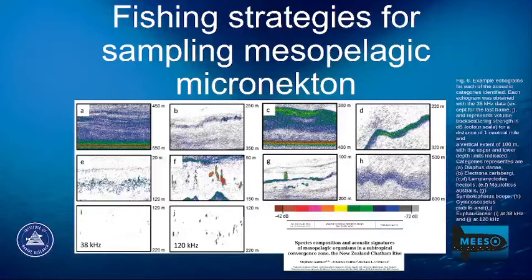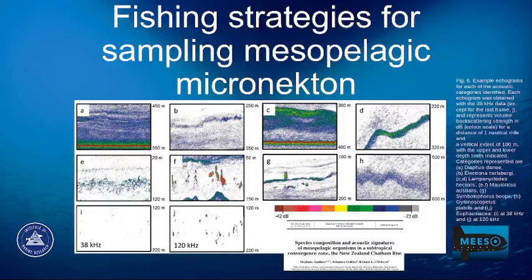Hi all, this is a short webinar made by the MISO team dealing specifically with fishing strategies for sampling mesopelagic micronecton. To start off, let me just say that there is not likely to be one correct way of doing this, as distributions of mesopelagic organisms vary quite a lot. To exemplify this, I've taken a figure from a 2014 study by a New Zealand group where they compared catches and acoustics to study the different acoustic signatures of different types of mesopelagic organisms.